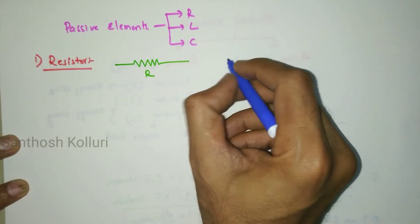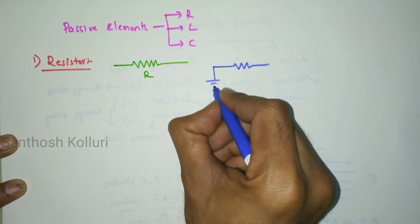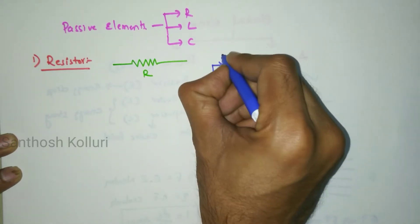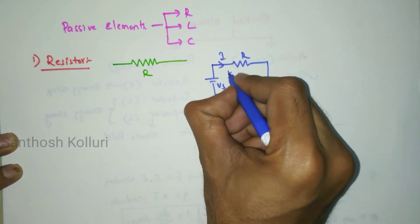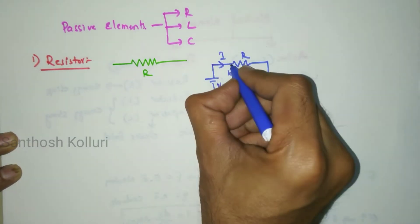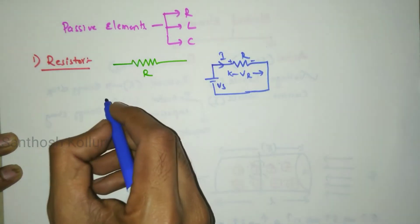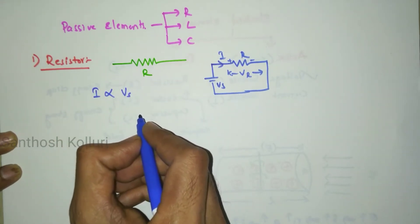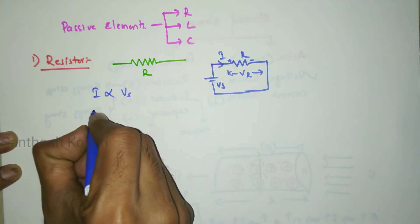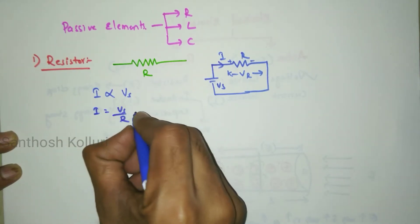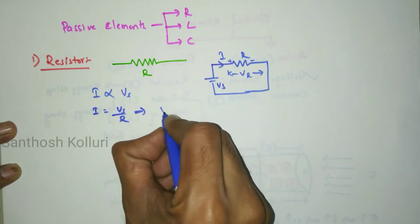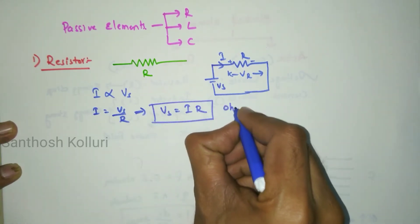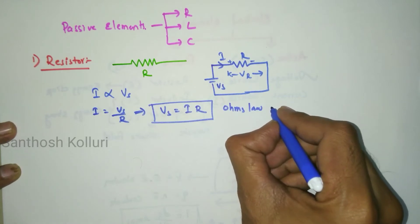If I take a circuit with a voltage source connected to a resistor R, the current flows through the resistor and the voltage drop across it is VR, with current entering at the positive terminal. The current flowing through the resistor is directly proportional to the applied voltage, giving I equal to Vs by R, or Vs equal to I into R. This is called Ohm's law for network theory.